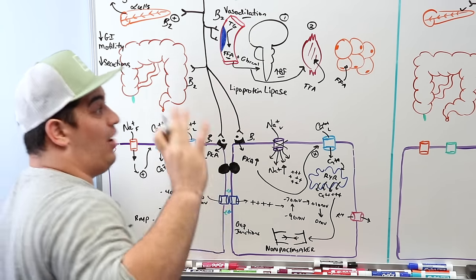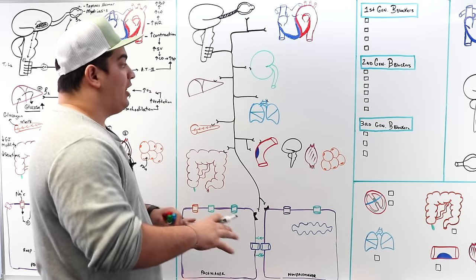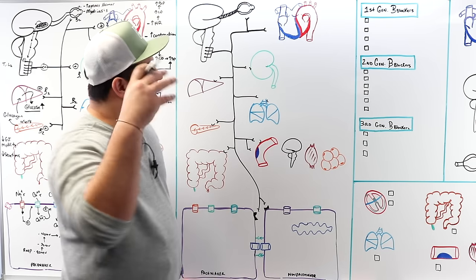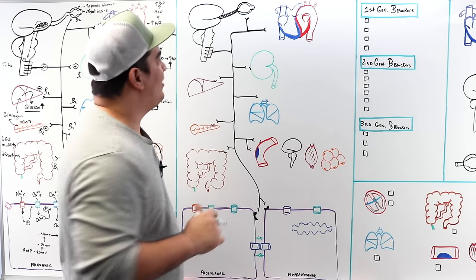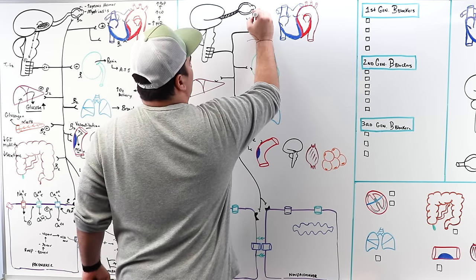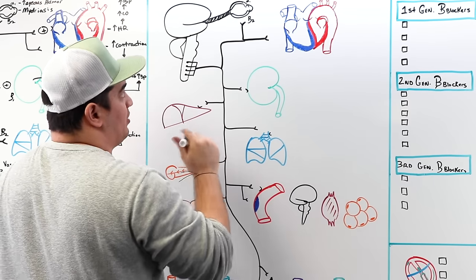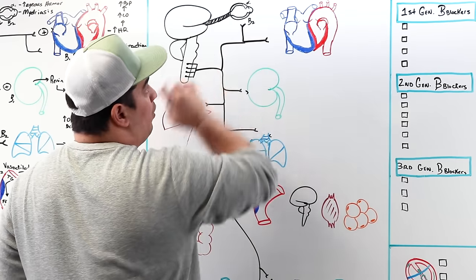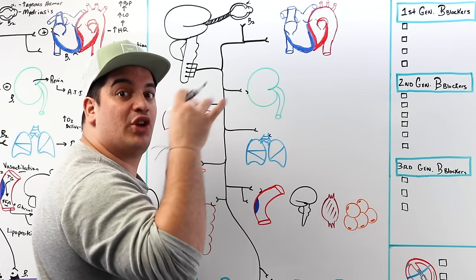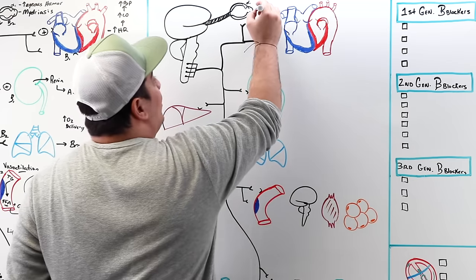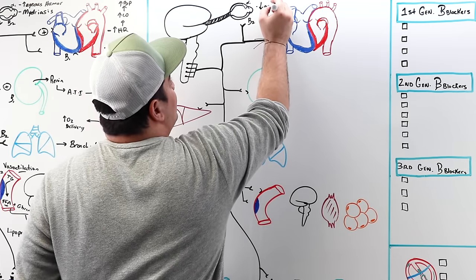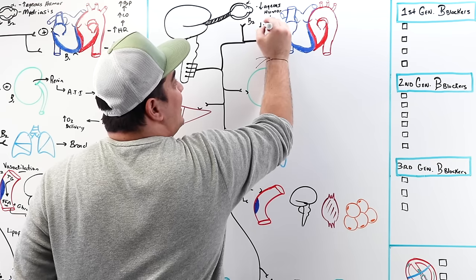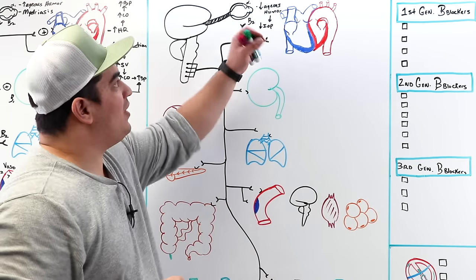Now that we understand how beta receptors work, we can understand how beta blockers work — by blocking every effect. On the eye, beta-2 receptors on the ciliary processes normally increase aqueous humor production. If we block that, we decrease aqueous humor production, which decreases intraocular pressure. This is clinically relevant — beta blockers like timolol are used topically for people who have high intraocular pressure, such as in glaucoma.